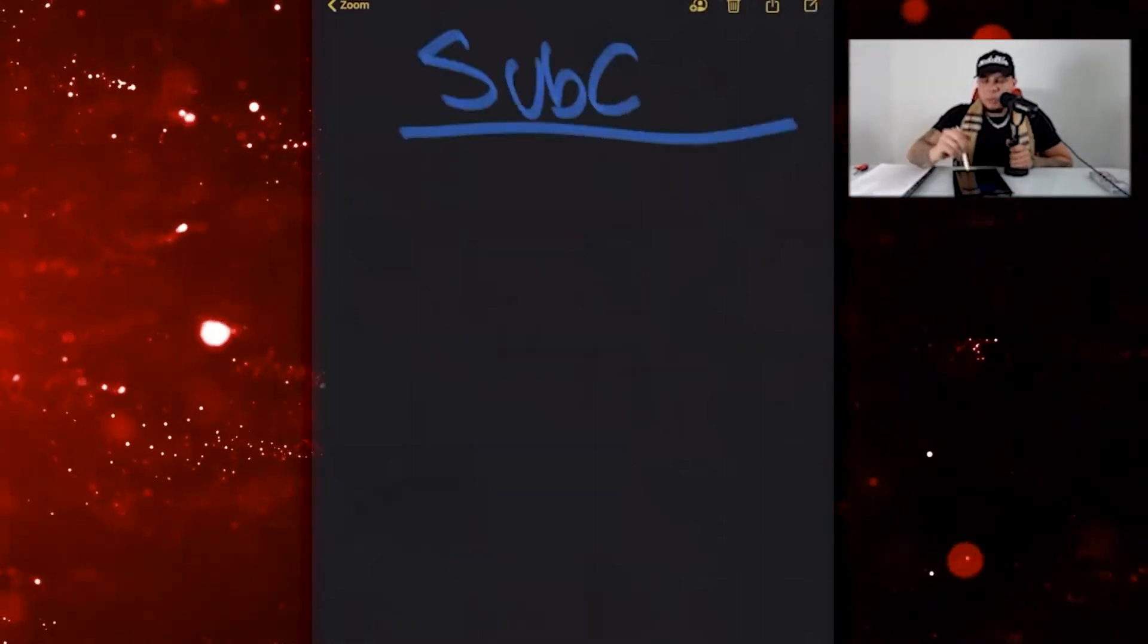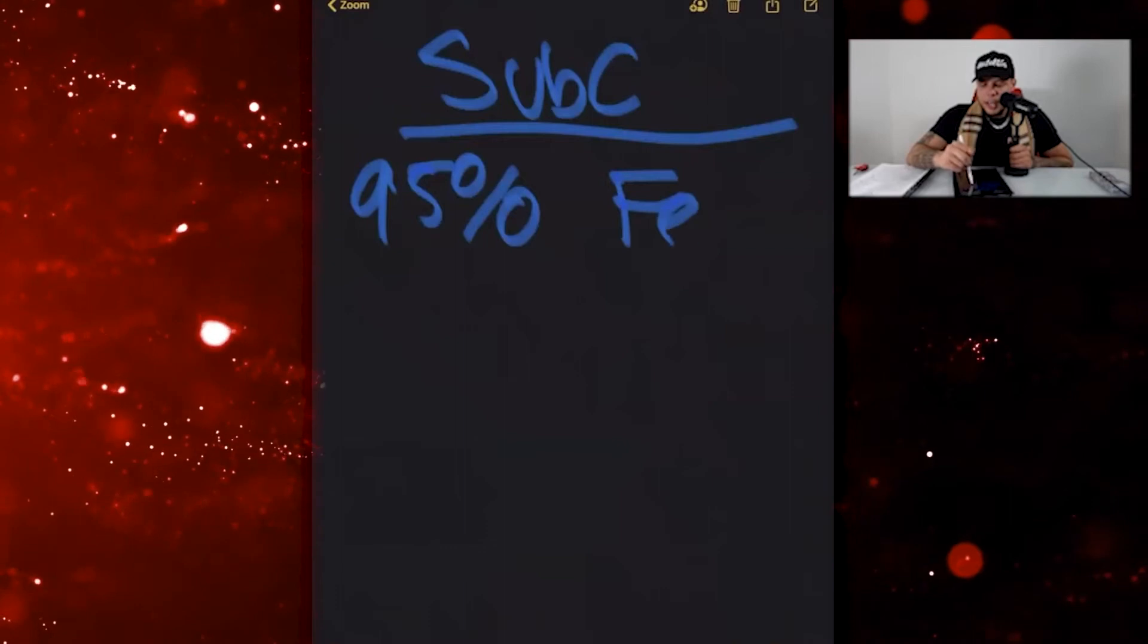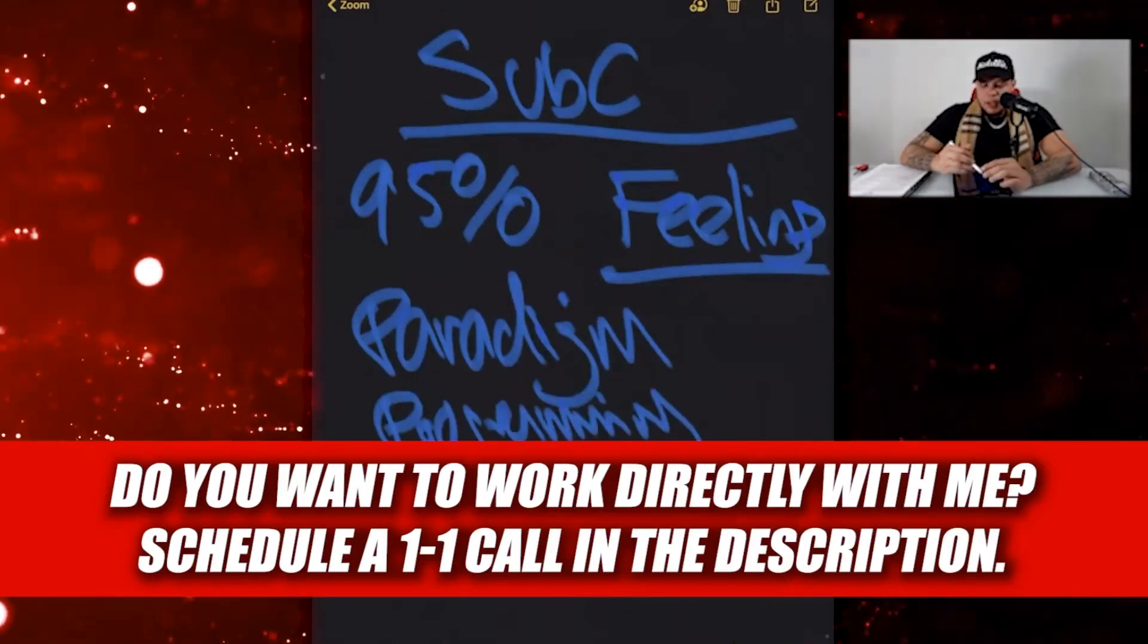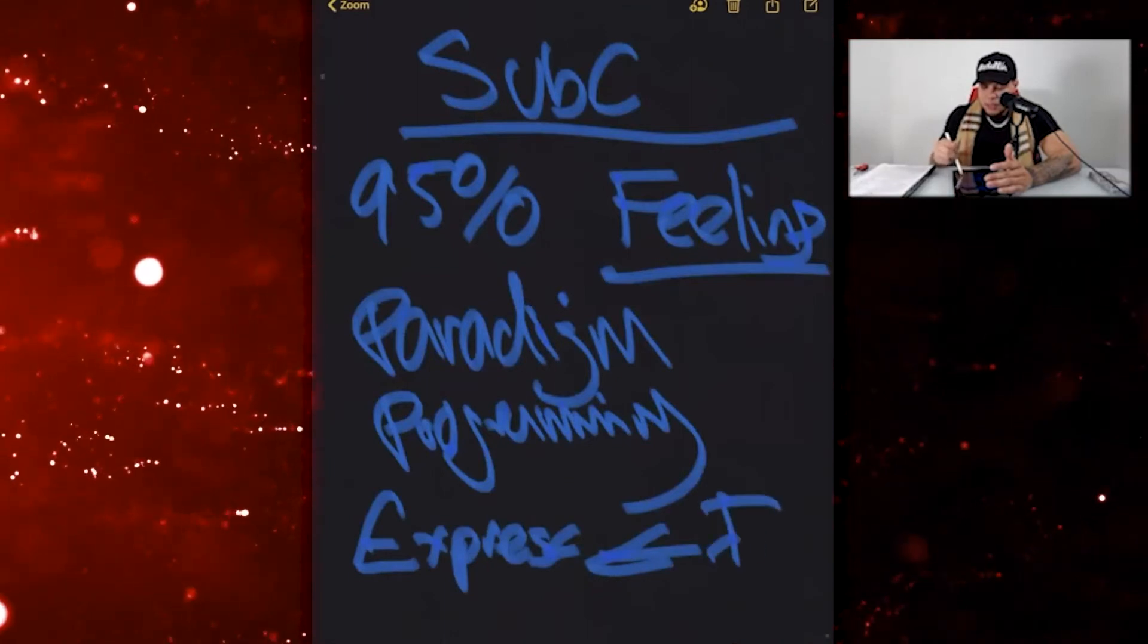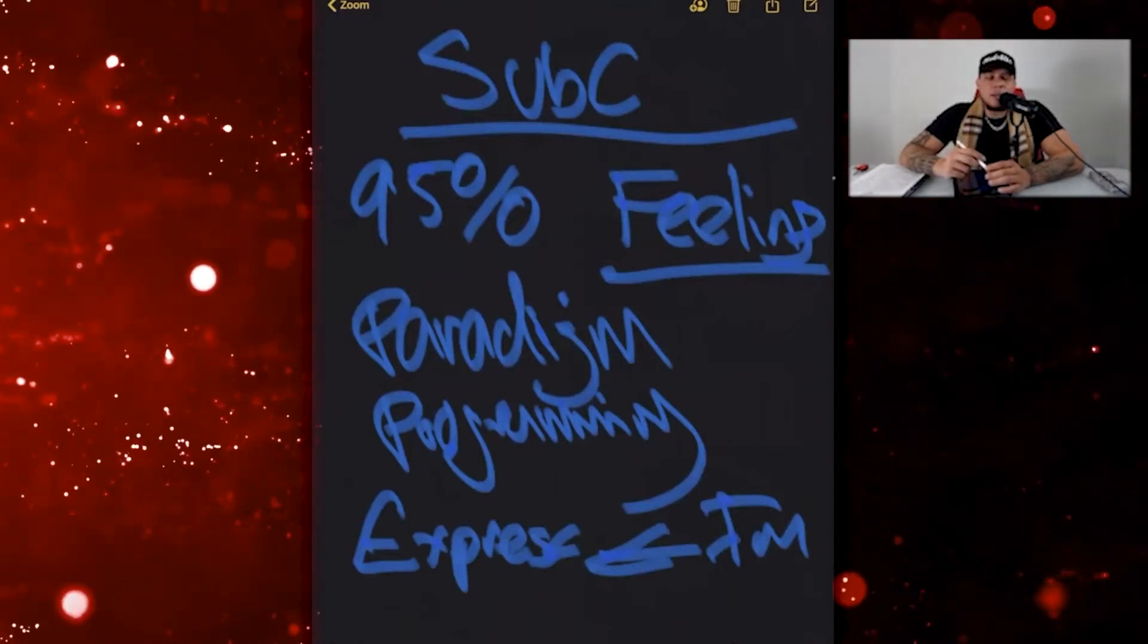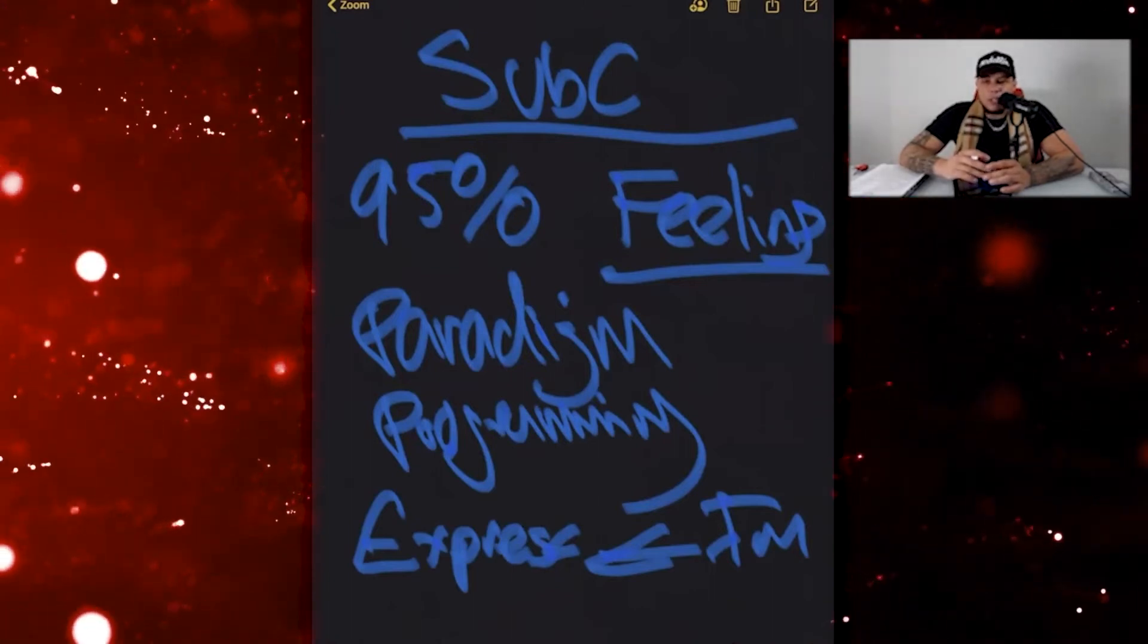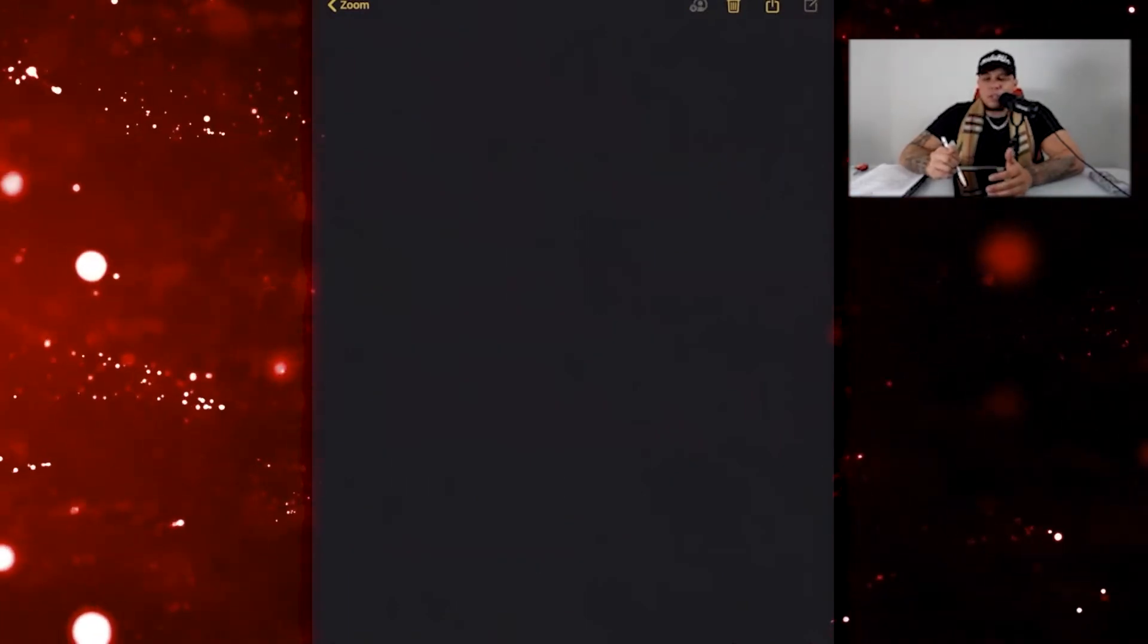Now we have the subconscious mind. The subconscious mind controls ninety-five percent of your results. The word we're going to have here is feeling. It's your feeling mind, it's where your paradigm sits, it's your programming. The subconscious mind will express whatever is impressed upon it. If you impress on it that you're clumsy—who knows that girl or that person that's like, 'I'm so clumsy, I'm so clumsy'? You're not clumsy, you're just impressing that upon you, and that's why it's real now and you're going to fulfill what you say.